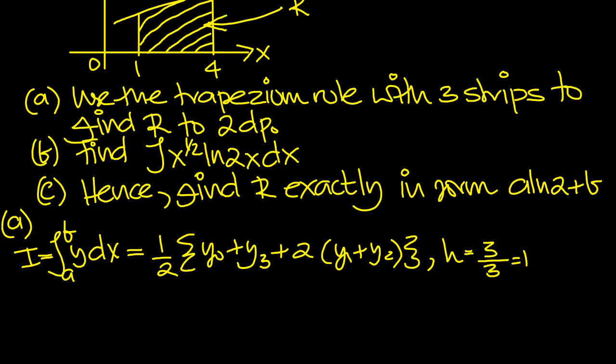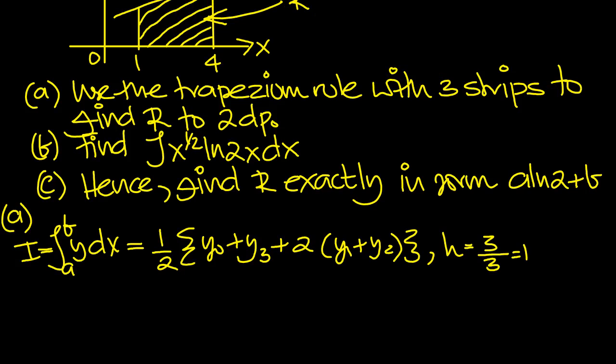So we need these values then. Let's work them out. So we've got x0, x1, x2, and x3. There's our x ordinates. 1, 2, 3, and 4. Now we need our y ordinates. So y0, y1, y2, and y3.